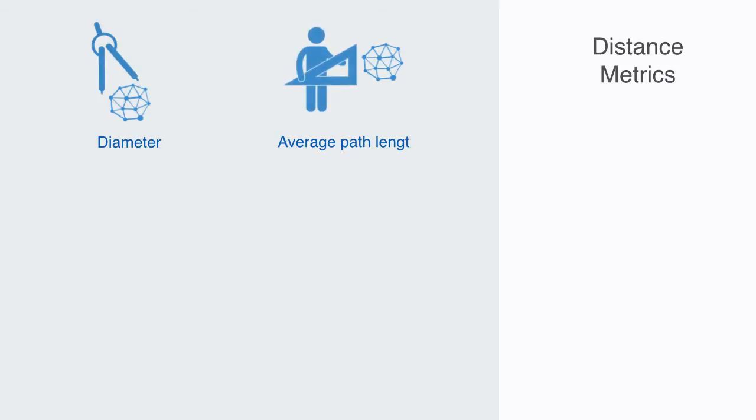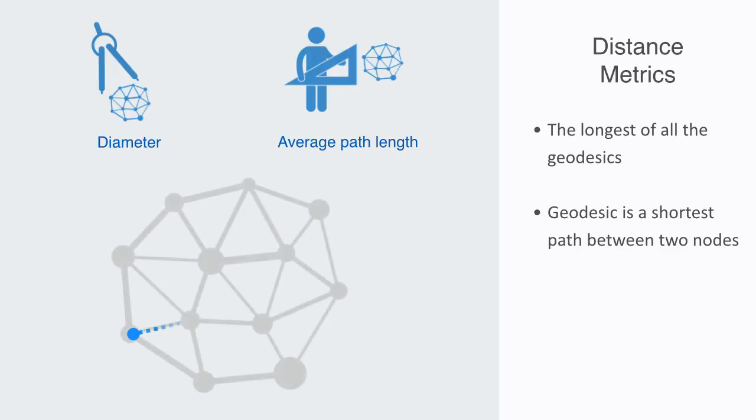Two important metrics for capturing this overall distance between nodes are the network's diameter and its average path length. The diameter of a network is simply the longest of all the geodesics in the network. If we remember back, a geodesic is the shortest path between two nodes. So when we are asking for the diameter of a network, we are really looking at all the shortest paths and then choosing the longest one.